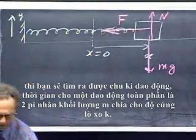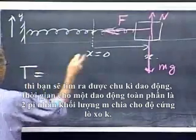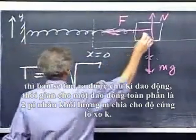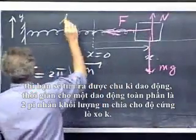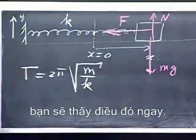Then, as I will show you now, you will find that the period of oscillation, the time for one whole oscillation, is two pi times the square root of the mass, m, divided by the spring constant, k. I will derive that. You will see that shortly.